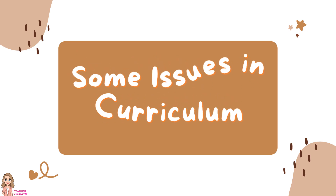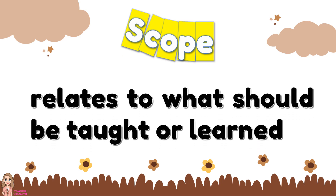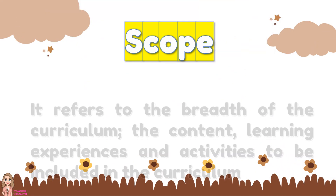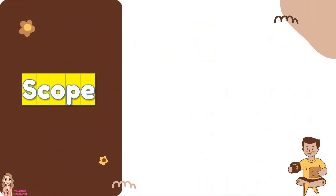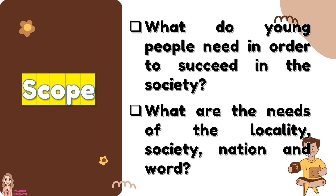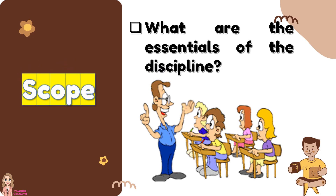Let's talk about some issues in the curriculum. Scope relates to what should be taught or learned. It also refers to the breadth of curriculum — the content, learning experiences, and activities to be included. These are the questions to be addressed when doing the scope and sequence of our curriculum: What do young people need in order to succeed in society? What are the needs of the locality, society, nation, and world? Lastly, what are the essentials of the discipline?